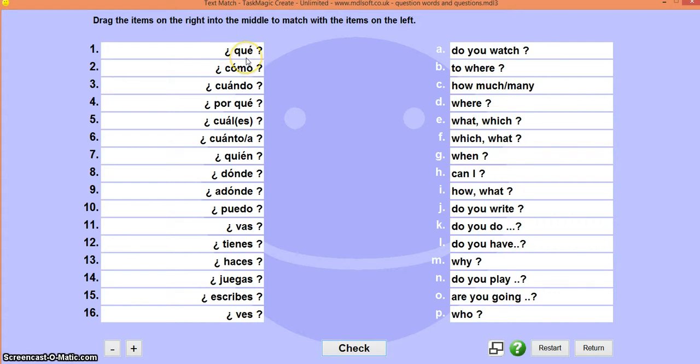We've got '¿qué?' which is what, or sometimes which. '¿Cómo?' - how or what, obviously you've seen the question 'what's your name?'. '¿Cuándo?' - when. '¿Por qué?' - why. '¿Cuál o cuáles?' - which. '¿Cuánto?', '¿cuánta?' - how much, how many. '¿Quién?' - don't forget the plural, '¿quiénes?' - who. '¿Dónde?' - where. '¿A dónde?' - to where. '¿Puedo?' - can I? '¿Vas?' - do you go? '¿Tienes?' - do you have? '¿Haces?' - do you do, or do you make? '¿Juegas?' - do you play? '¿Escribes?' - do you write? '¿Ves?' - do you see? Hopefully you've got those right. We'll wind it back if you need a refresh of this particular topic.